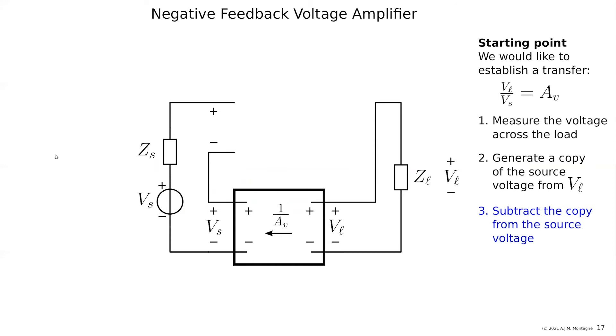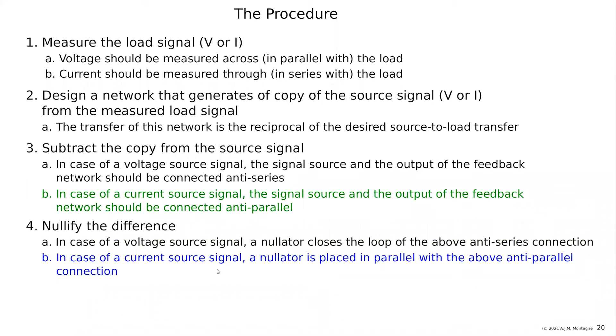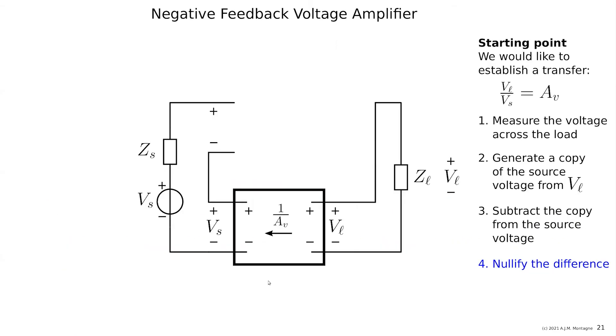So we are going to nullify this difference in case of a voltage. So you see here the green one, blue one, in case of a voltage the nullator closes the loop of the above series connecting. And in case of a current, the nullator is placed in parallel with the above anti-parallel connection. So what is a nullator? A nullator is a network element that you cannot buy. It's a conceptual thing and it puts a condition in your network equation.